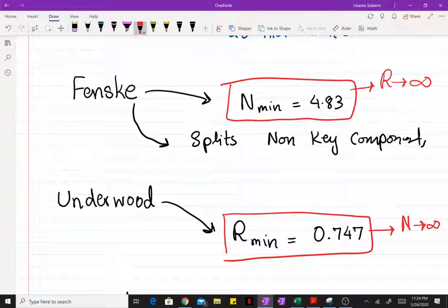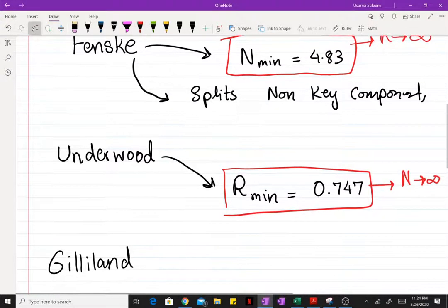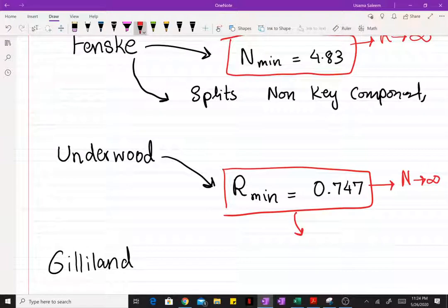As you increase the reflux ratio, number of stages go down, but your column becomes wider. So a good rule of thumb is to use between 1.2 times minimum to 1.5 times the minimum reflux ratio that you've calculated.